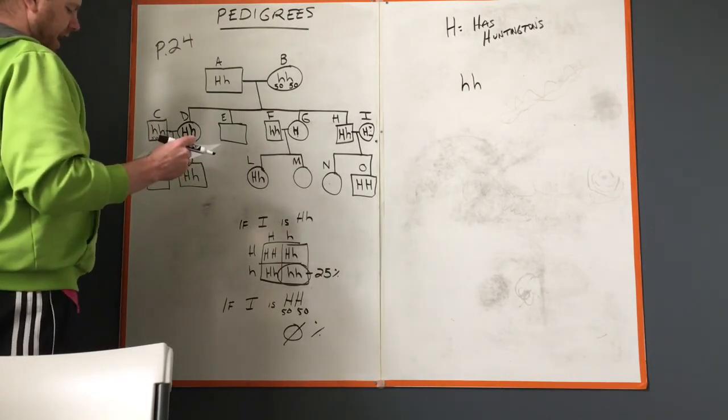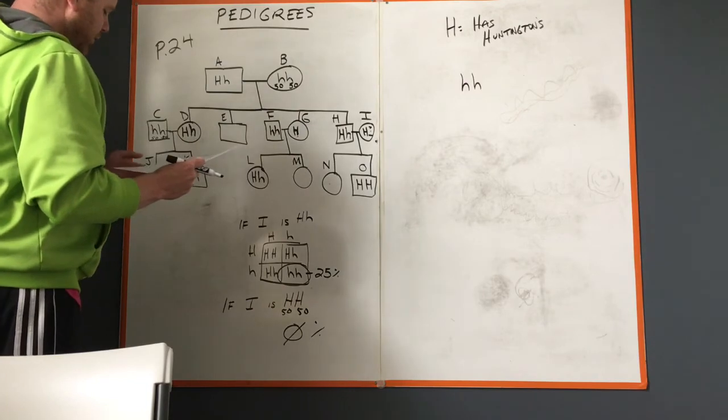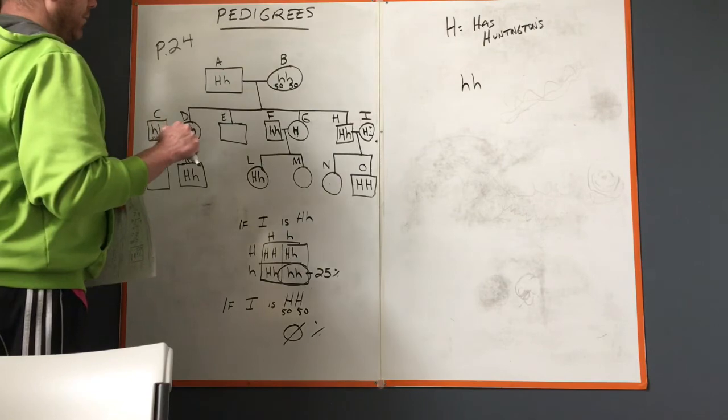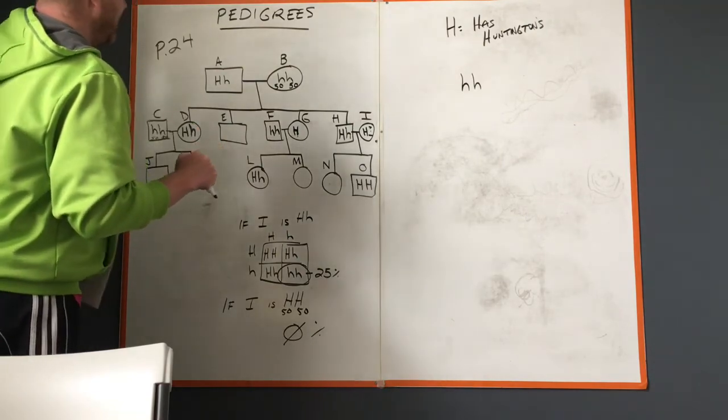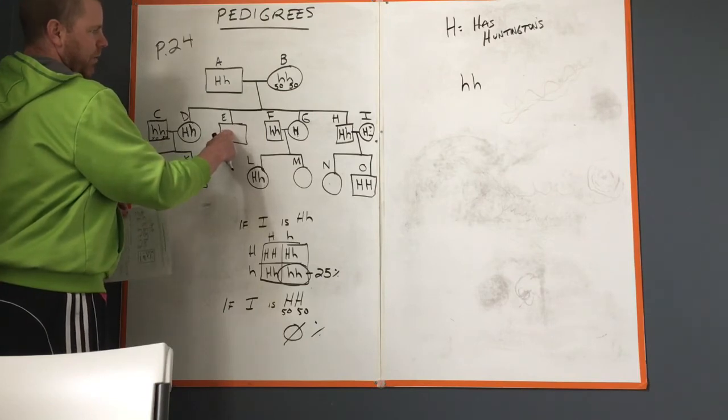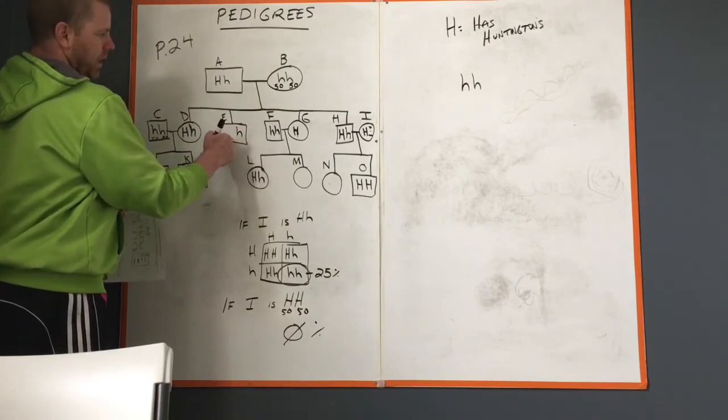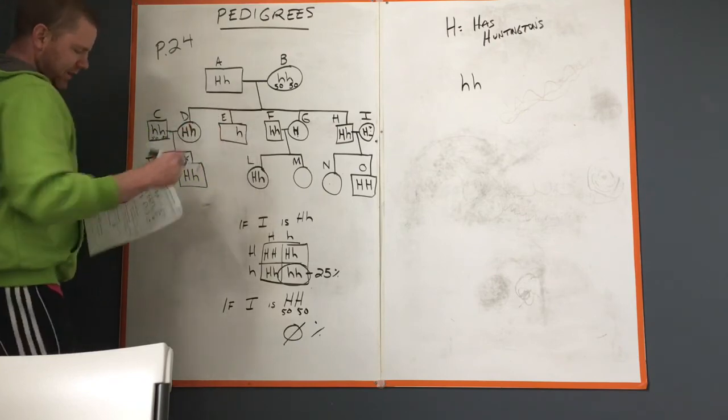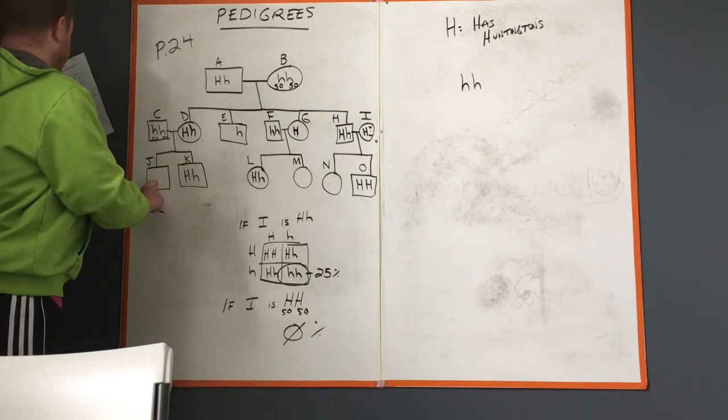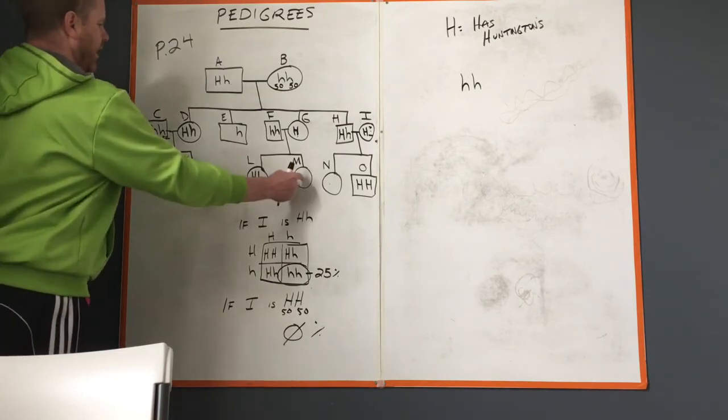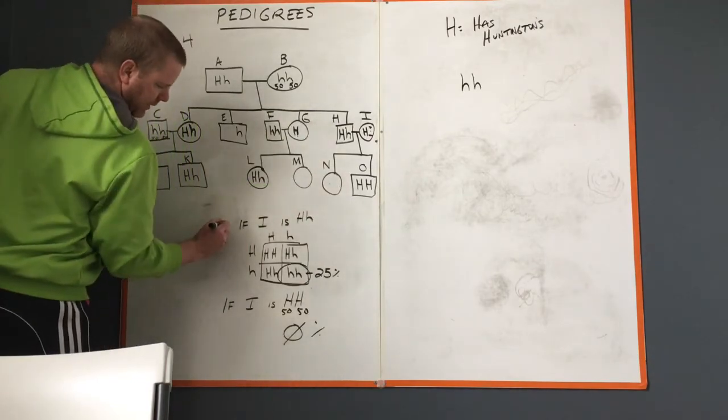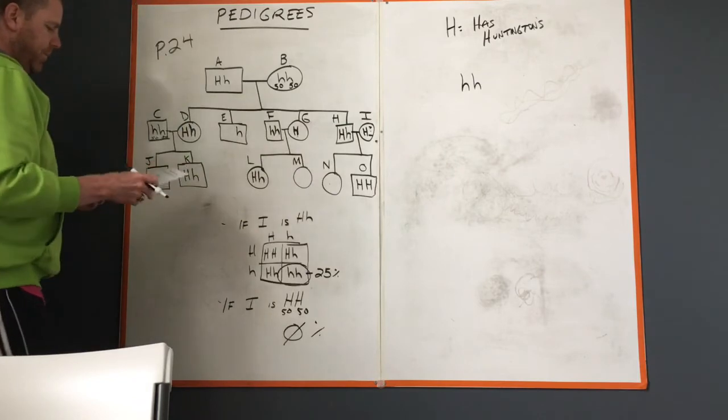Identify people whose genotypes cannot be determined without more information. The following people we can't know: obviously letter E, where we know a little h but we don't know the other, could be a big H, could have been a little h. Letter J is a possibility, letter M is an unknown, letter N is an unknown, and then we just talked about letter I. So the people we don't know are E, J, M, N, and I.